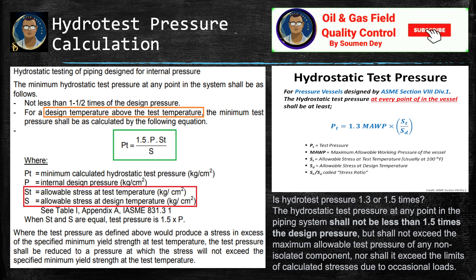When St and S are equal, the test pressure is 1.5 × P. Where the test pressure as defined above would produce a stress in excess of the specified minimum yield strength (SMYS) at test temperature, the test pressure shall be reduced to a pressure at which the stress will not exceed the SMYS at the test temperature.